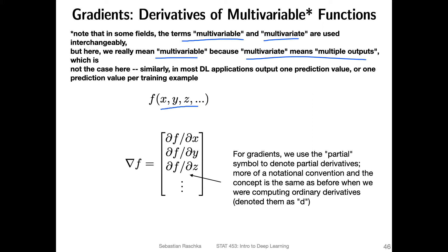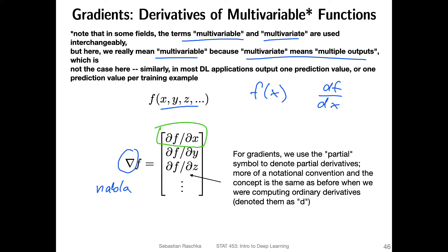Consider a function where we have multiple inputs. If we only had one input, we would usually write the derivative with a small letter d. Now, since we have multiple variables, we have actually a vector as the derivative. This is also called the gradient. We use this upside-down triangle - the nabla symbol. So here we have multiple things going on in this vector, and each row is a partial derivative.